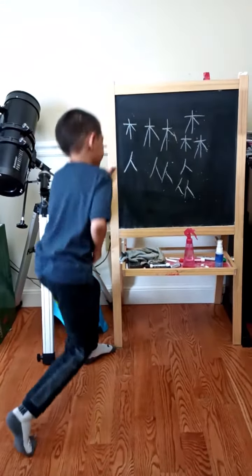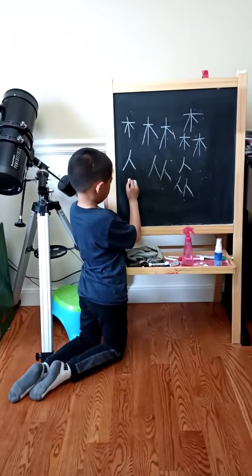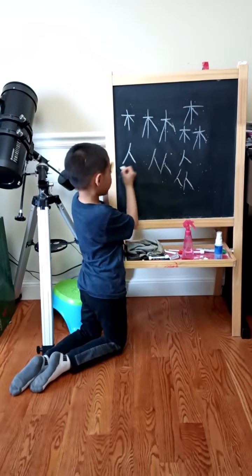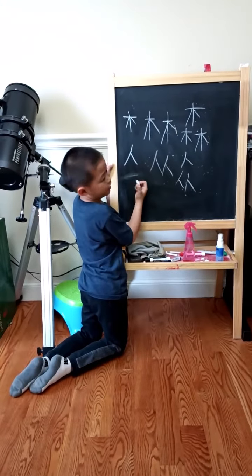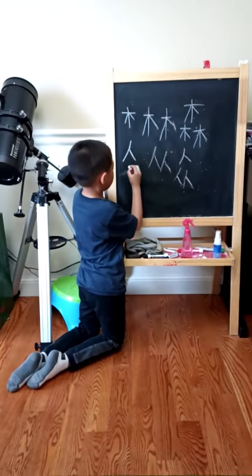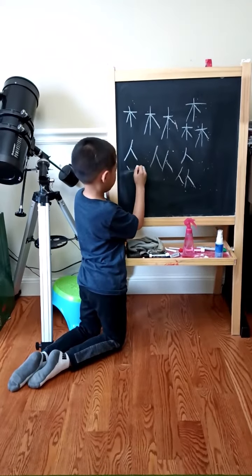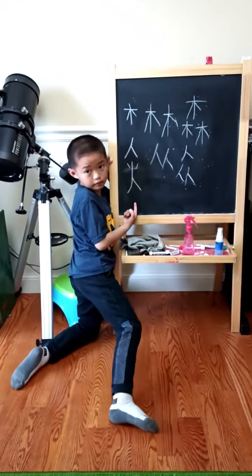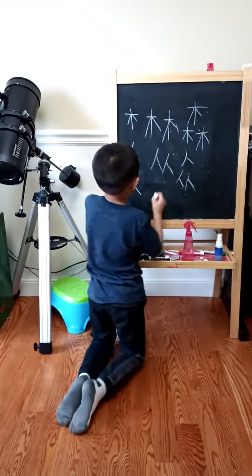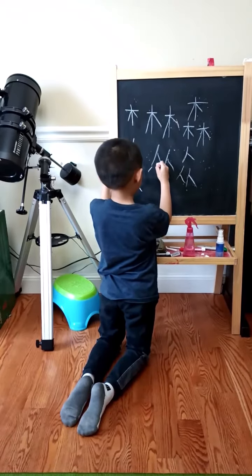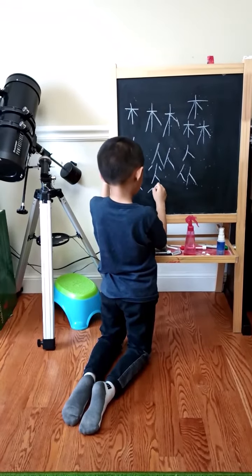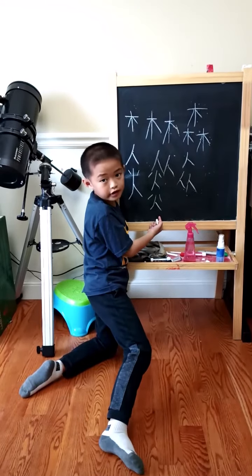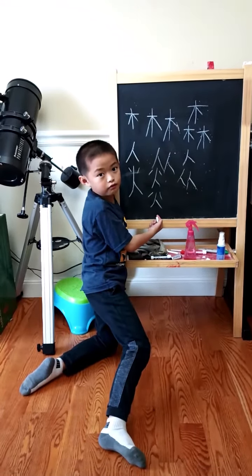Next, we're going to learn the character for fire. Make sure you don't draw an extra line and mix it up with other characters — it's actually just this simple shape. It means fire. And if we stack two on top of each other, that means really, really hot.